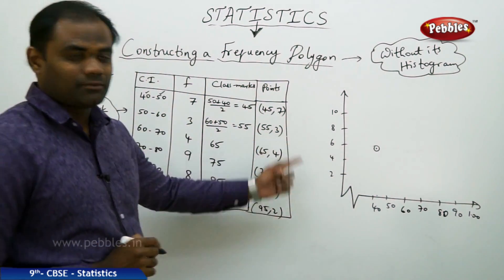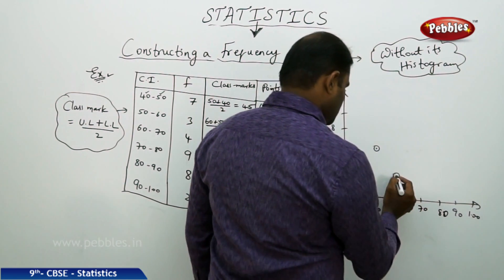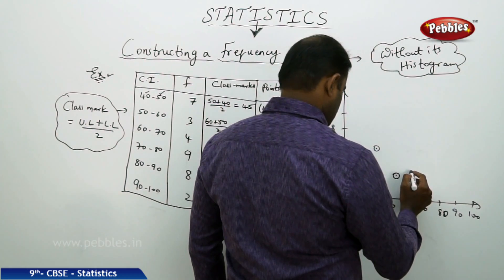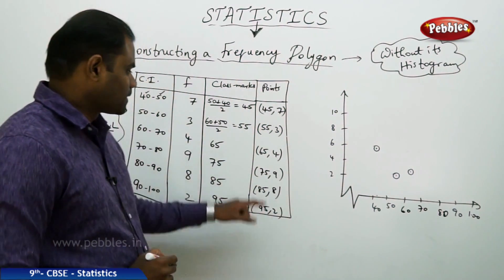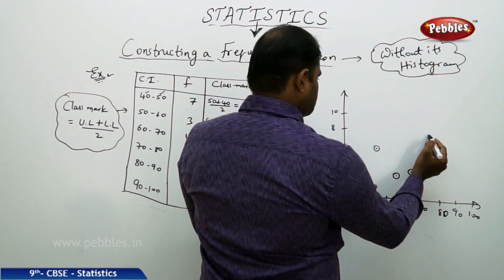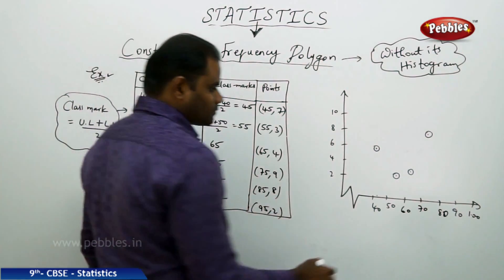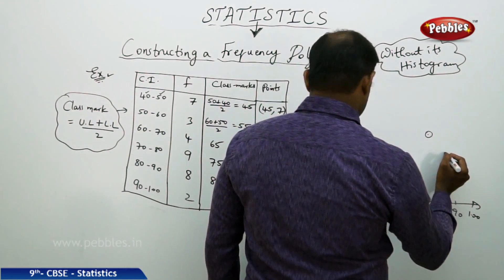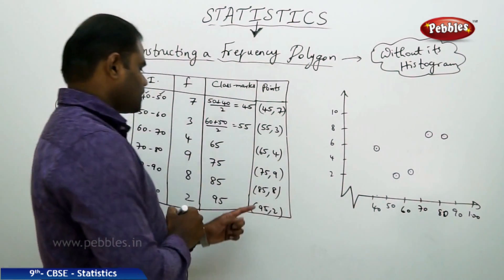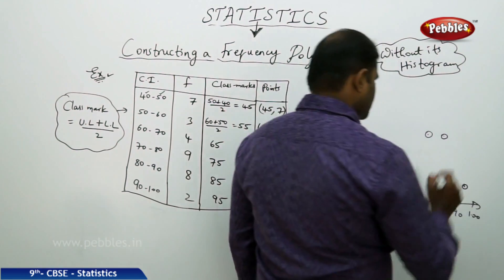Next, 55 and 3 which lies at 55. Next is 65, 4 which lies somewhere here. Then 75 and 9, 75 is here and it shoots up to 9 out here. And then I have 85 and 8 which comes 85 approximately down. And 95 and 2. So finally 95 here and 2.